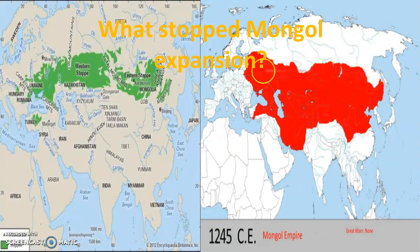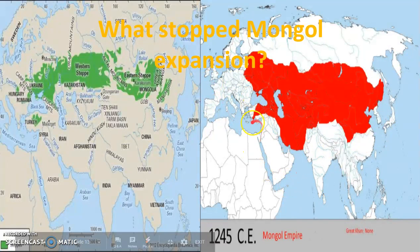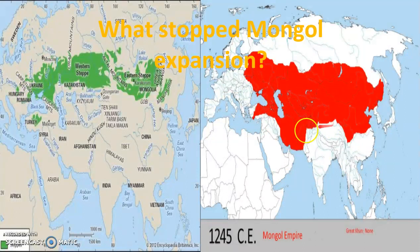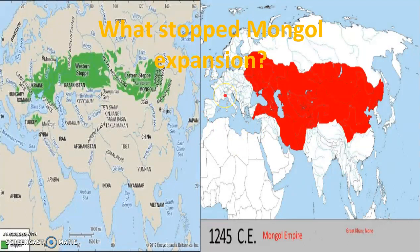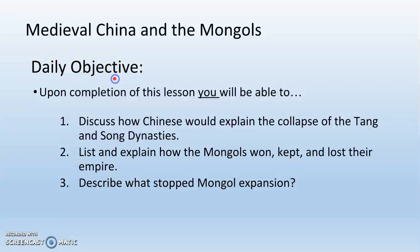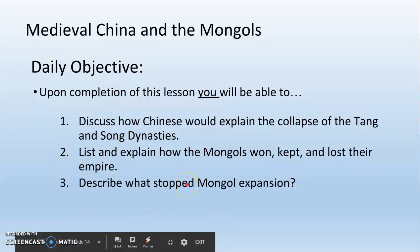What stopped the Mongol expansion? This was the largest land empire in history — why didn't they continue into Europe, India, or Africa? Basically, it comes down to the steppe. The empire hugs the Asian steppe, and without the grasslands to feed their animals, the Mongols couldn't fight. They couldn't go into North Africa — no grasslands. They couldn't push further into Europe — the grasslands they needed for their sheep, goats, and horses weren't there. Ultimately, what stopped the Mongol expansion is they ran out of steppe.